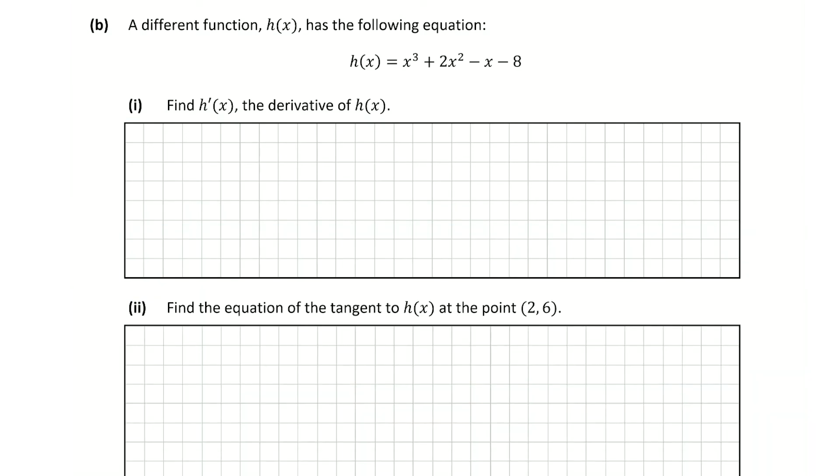Now in question B, we're dealing with a little bit of calculus but still dealing with functions. We're told that a different function h(x) has the following equation. So h(x) = x³ + 2x² - x - 8. Part 1 asks us to find the derivative of h(x). The first thing I'm going to do is write down h(x) for myself: x³ + 2x² - x - 8.